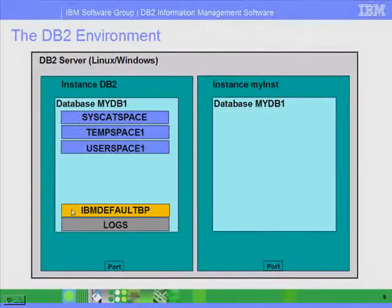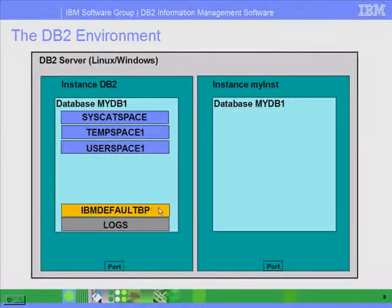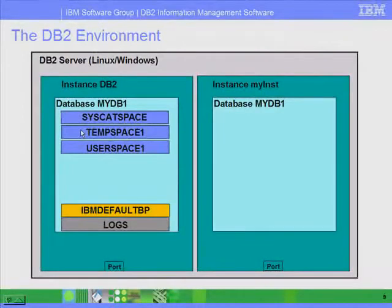As part of the creation of a database, a buffer pool is also created. A buffer pool is cached memory for the database, and you can create several buffer pools, but the one created by default is called IBMDEFAULTBP. There are also log files created for recovery purposes. Additionally, some configuration is done using a tool called Autoconfigure, and we will talk more about this in the following lesson.